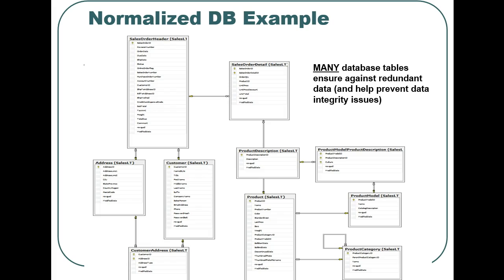Here is a simple database that has been normalized. Notice that this database only contains information about sales, customers, and products. However, applying the normalization rules has created a database that contains many tables and many links or joins among the tables.